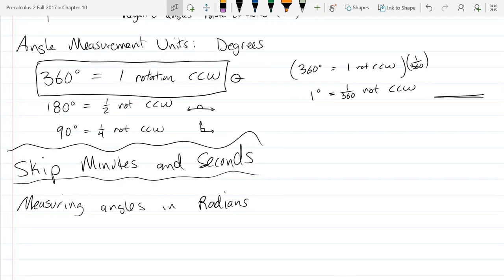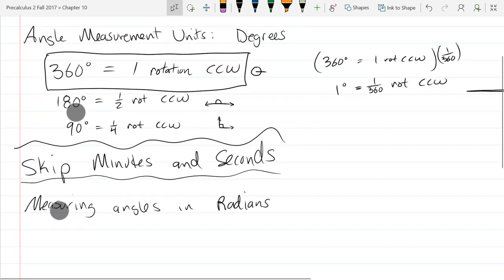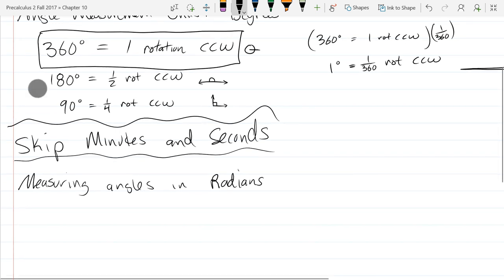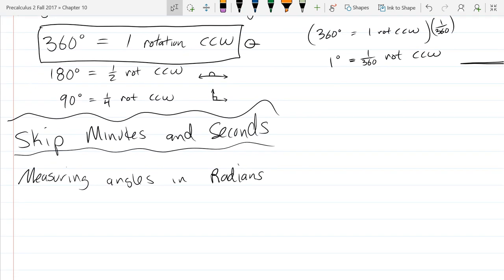So why do we choose 360 to measure angles in? The only reason I can come up with is that there's a lot of factors. So why is there 12 inches in a foot instead of 10? Basically because there's more factors of 12. And for a similar reason, they use 360 degrees instead of something like 500 or 1,000 because there's a lot more factors. And so you can subdivide without using fractions.